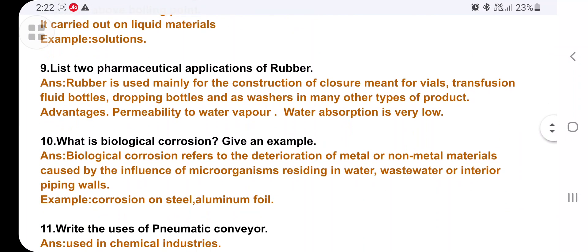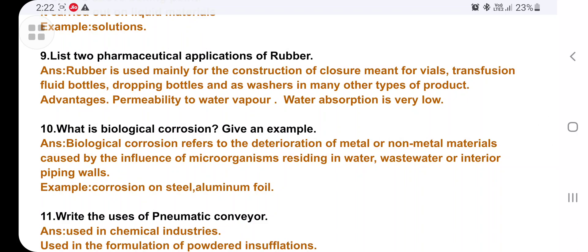What is biological corrosion? Give an example. Biological corrosion refers to the deterioration of metal or non-metallic materials caused by the influence of microorganisms. Examples are corrosion on steel, aluminum foil.